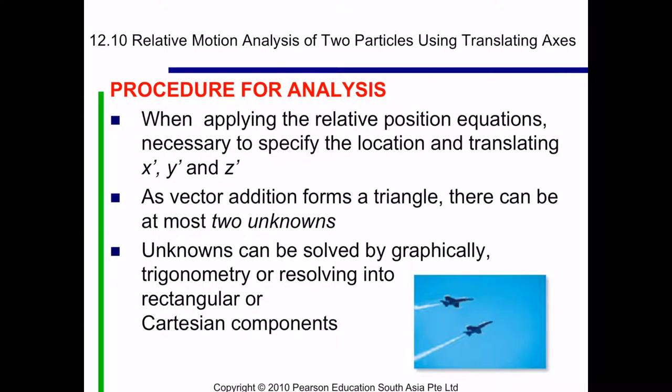When applying the relative position equation, it is necessary for us to specify the location and the translating X, Y and Z. As a vector addition formed as a triangle, there can be at most two unknowns. Unknowns can be solved graphically, by trigonometry, or by resolving into rectangular or Cartesian components.